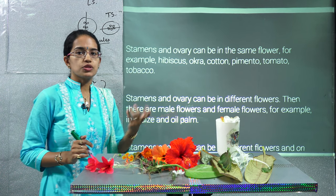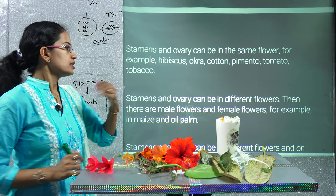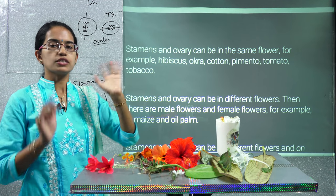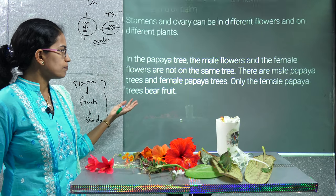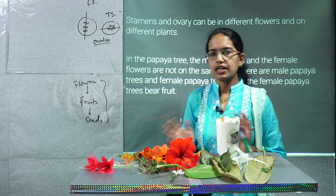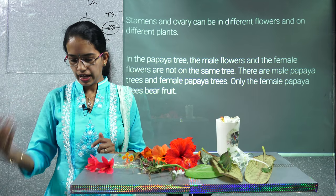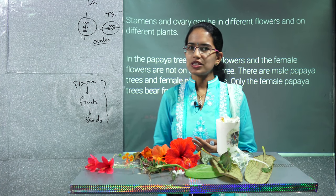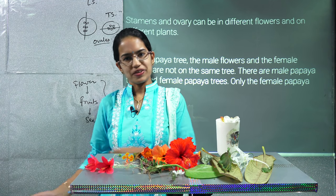There are numerous plants where the male and female reproductive parts are on the same flower — examples include hibiscus, okra, cotton, tomato, and tobacco. The papaya plant is unique where you have a separate male flower tree and a female tree. Similarly, there can be separate male and female flowers on the same tree — for example maize and oil palm. So there are various modifications that we see in day-to-day life, and the details on these we would understand in our higher classes. Do subscribe to the channel — we will be bringing more interesting lectures on science. Have a very good day ahead.